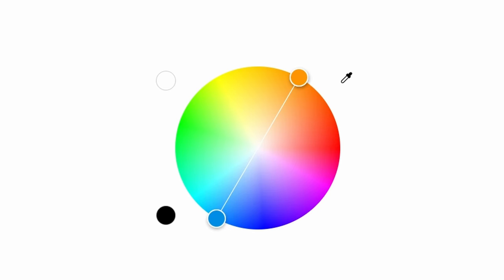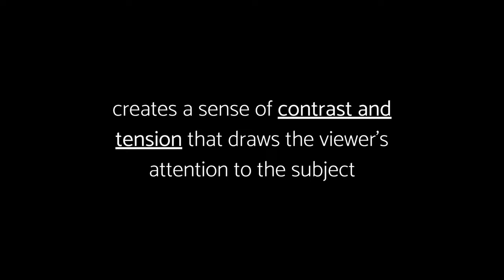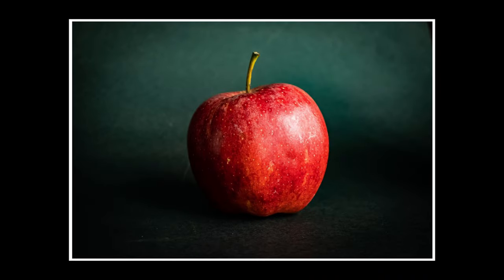On the other side, we have complementary colors. Complementary colors are colors that are opposite each other on the color wheel, such as blue and orange or red and green. By using complementary colors in your photograph, you can create a sense of contrast and tension that draws the viewer's attention to the subject. You'll want to pay attention to the color of your subject — their outfits, makeup, hair color, skin tone, etc. — and the background or environment they contrast with. For example, if your subject is a red apple, you can choose a green background to create a sense of contrast and vibrancy. Using complementary colors is especially effective when photographing still life or product shots.